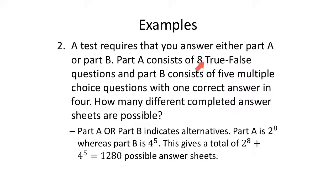For part A, we have eight true false questions. True false has two possible answers. I need to answer eight of those, so that's two to the eighth power. Part B consists of five multiple choice questions with one correct answer in four. So there are four options for each question, A, B, C, and D. And I'll have five questions. So four to the fifth power.